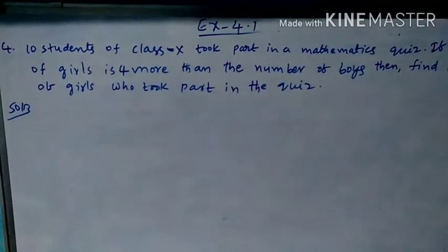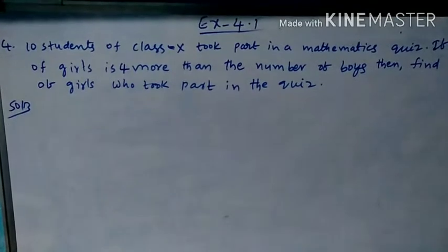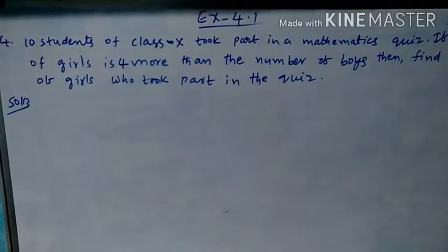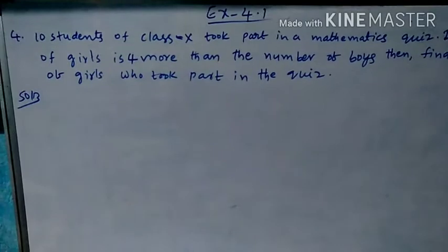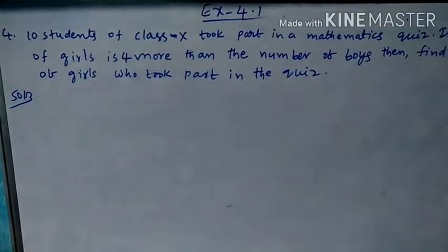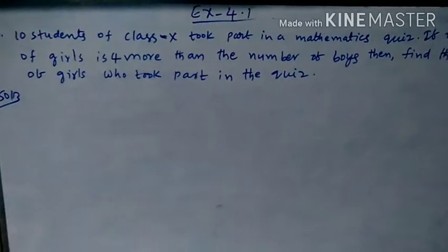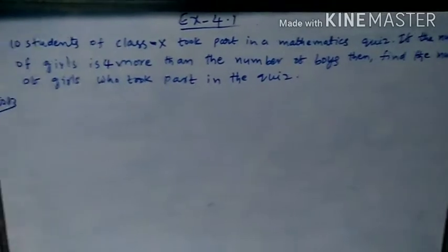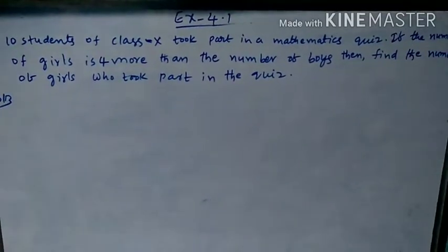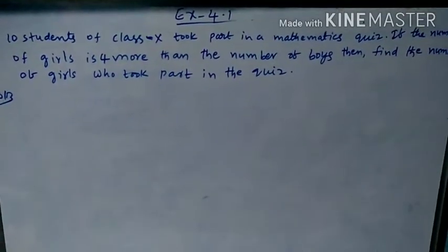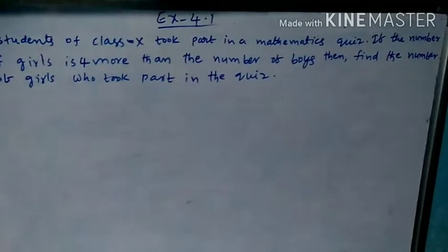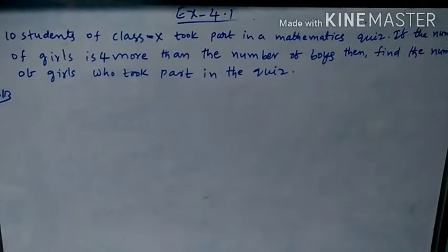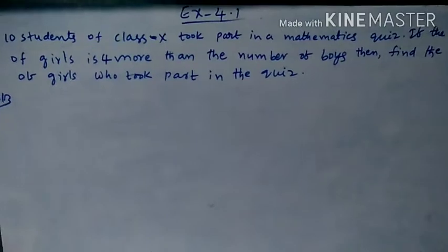Today our topic is pair of linear equations in 2 variables, exercise 4.1, 4th question. 10 students of class 10 took part in a mathematics quiz. If the number of girls is 4 more than the number of boys, then find the number of girls who took part in the quiz.